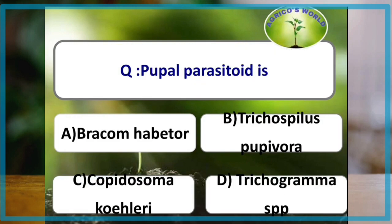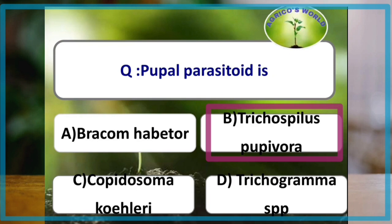Which of the following is a pupal parasitoid? The answer is Trichospilus pupivora. A pupal parasitoid is one which deposits its eggs in the host pupa and whose progeny complete their development and emerge from the host pupa itself.